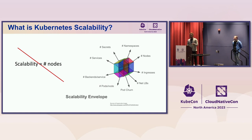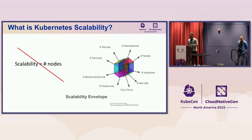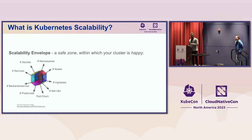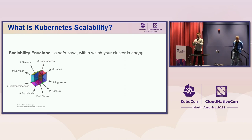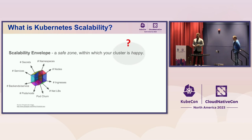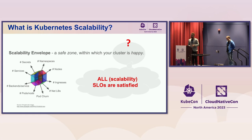We'd like to think about scalability of Kubernetes as a kind of hypercube with many different dimensions. Except for nodes, we also care about pod churn in your cluster, how many pods per node, how many services, and how many backends those services have. With that in mind, what we do is define a scalability envelope — a safe space where if your cluster is within that envelope, we ensure it will be happy. We have a bunch of scalability SLOs, and we ensure that if you configure a cluster properly and stay within the scalability envelope, those SLOs will be satisfied.